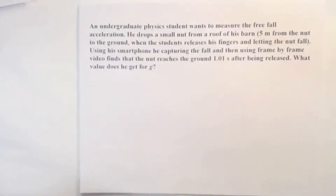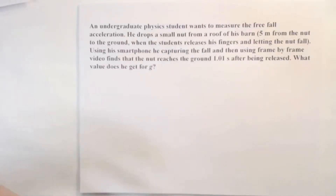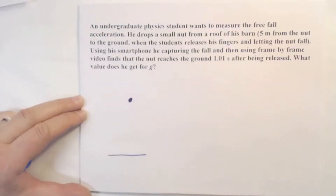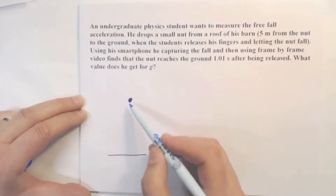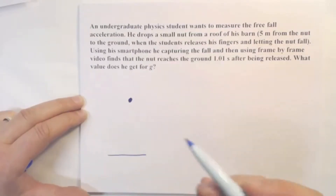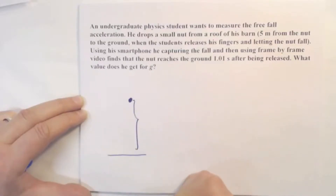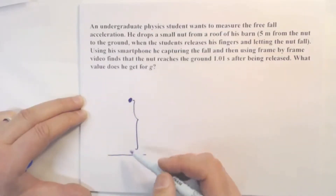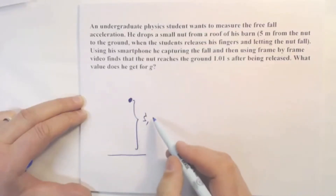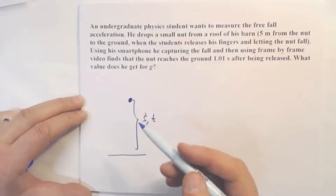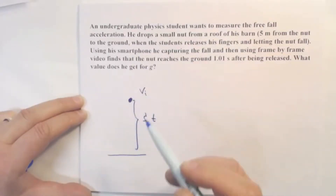Let's analyze the situation. As we know, some words are more important than others. For example, it doesn't matter that this guy is a student or undergraduate, and it doesn't matter that he is on the roof of his barn. What is important is that there is something above the ground and we let it go. The situation is simple: this object travels some distance, it takes some time to travel that distance, and we can assume something about its initial velocity.